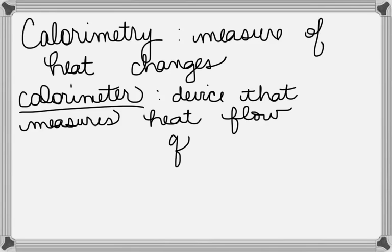There's a formula that we use for calorimetry. And that formula is Q equals MS delta T. What are all those variables?